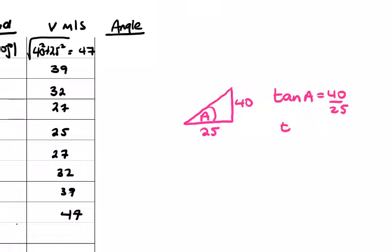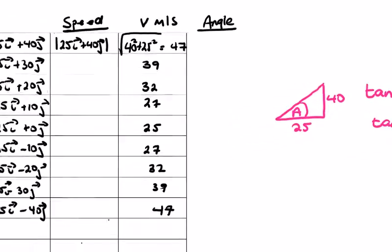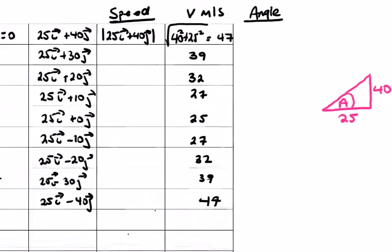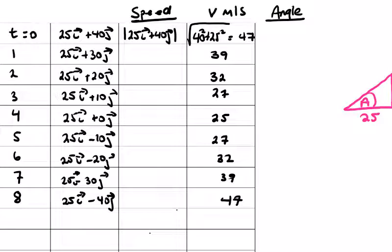So to get a, we say the inverse tan - you can see why trig is important. The inverse tan of a will be... a will be the inverse tan of 40 over 25, and on a calculator that will come out for the initial angle to be 58 degrees.